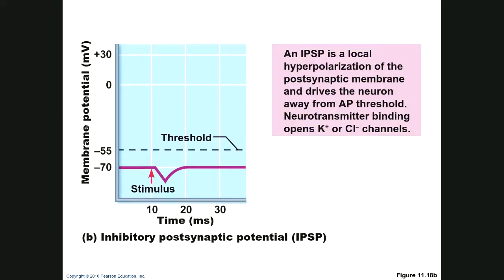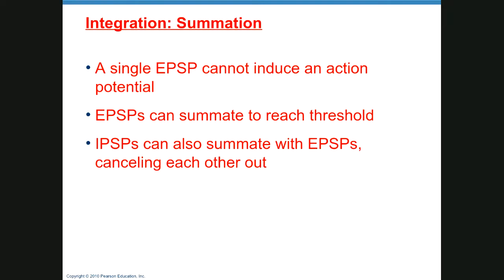An IPSP, or inhibitory postsynaptic potential, occurs when the neurotransmitter causes the opening of potassium or chloride channels. Potassium leaves the cell making it more negative; chloride entering also makes it more negative. The voltage moves away from threshold, hyperpolarizing the membrane and driving the neuron away from creating an action potential. An EPSP excites the cell; an IPSP inhibits it.